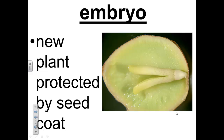A seed is made of three main parts: the seed coat, embryo, and endosperm. A seed coat is a covering that protects a new plant called an embryo. The seed coat also guards a stash of stored food called endosperm. An embryo has structures called seed leaves, or cotyledons.